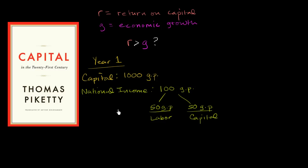R, in year one, is going to be equal to, well, the owners of capital got 50 gold pieces. The capital that they employed was 1,000 gold pieces. 50 divided by 1,000, this is going to be 5%. Now, let's think about this in the context of economic growth. Let's say we go from year one to year two.